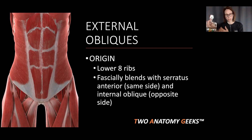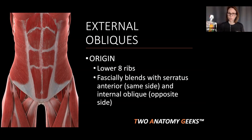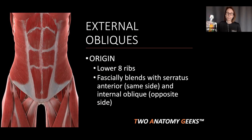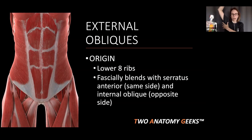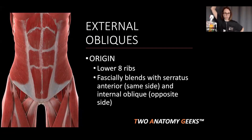So the right serratus anterior fascially blends with the right external oblique — that's a really cool relationship they have. The external oblique, as it descends and comes down into the insertion, fascially blends with the internal oblique on the opposite side. We create almost like a sash that goes from the right side all the way down, then crosses and goes over to the left side and down to that left hip area.